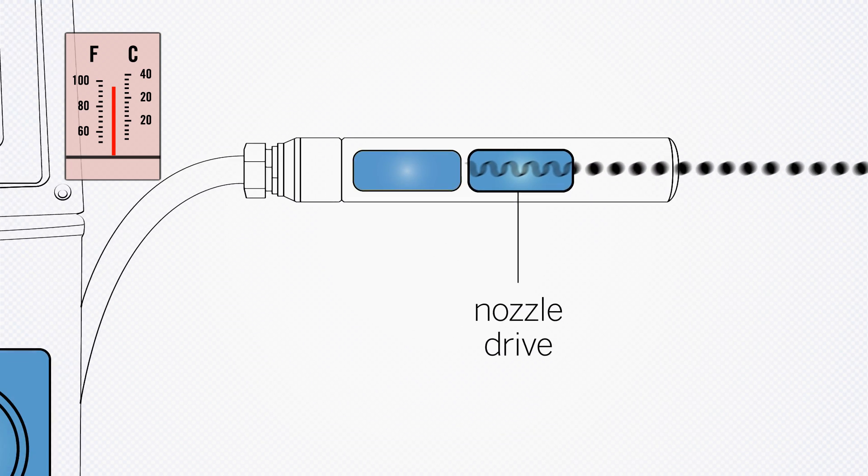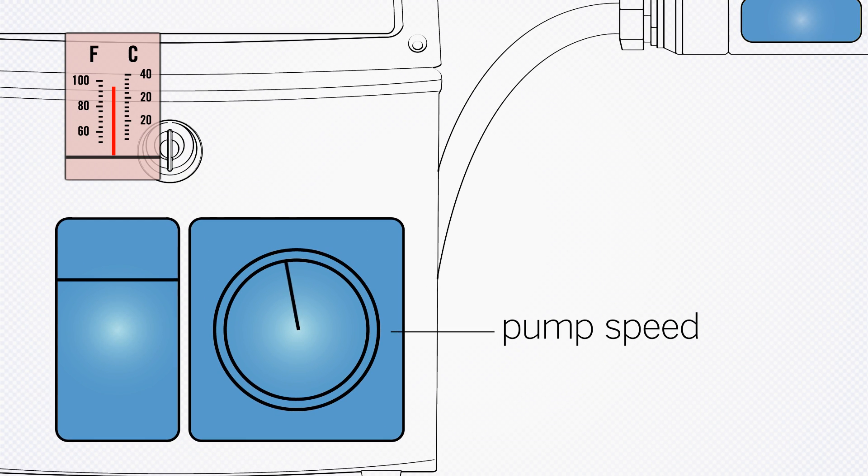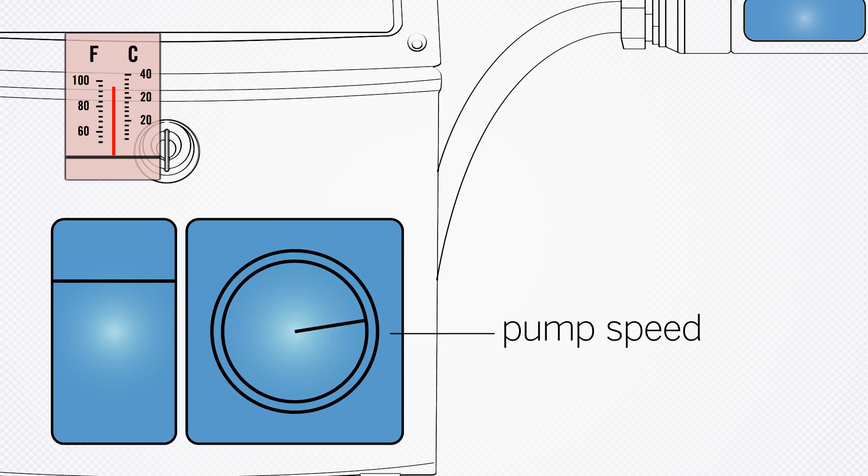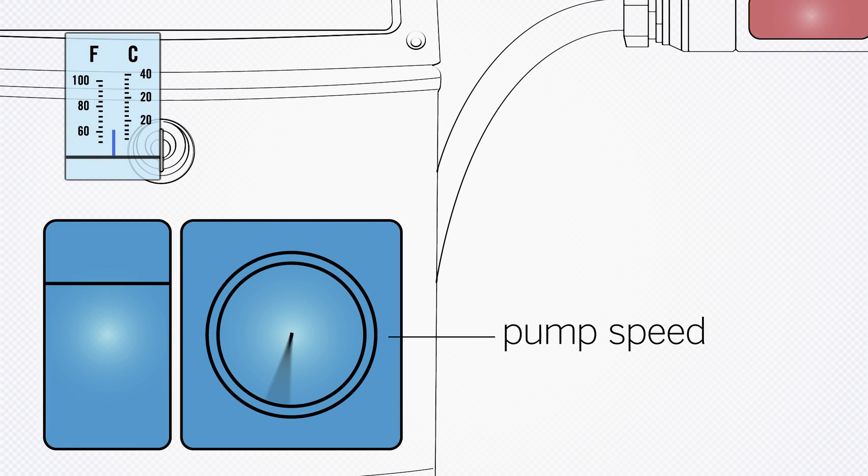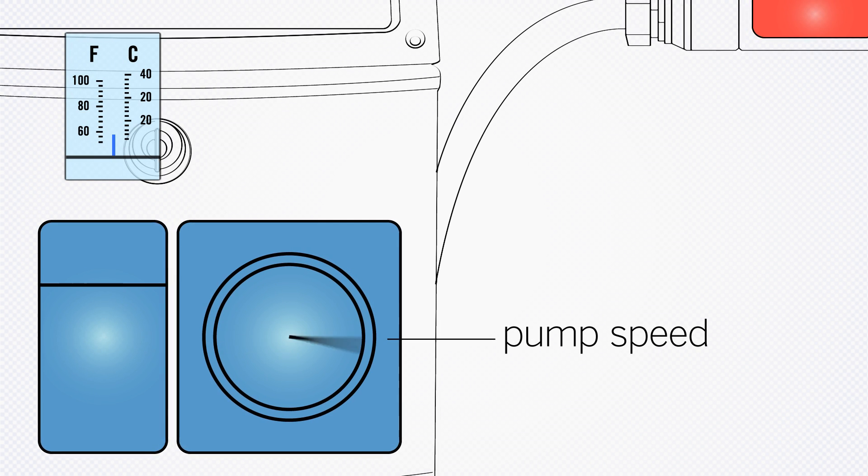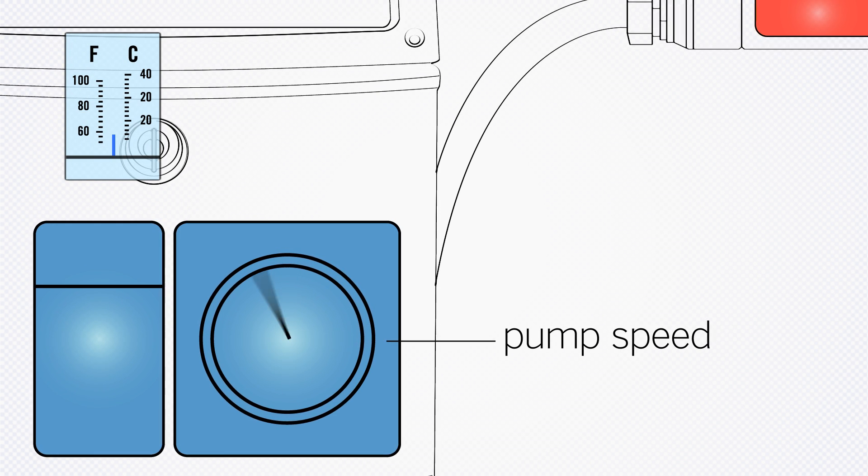Time of flight velocity is controlled with dynamic pump speed. The printer continually monitors and maintains drop velocity by adjusting pump speed, which is essential to maintaining constant print quality in changing conditions.